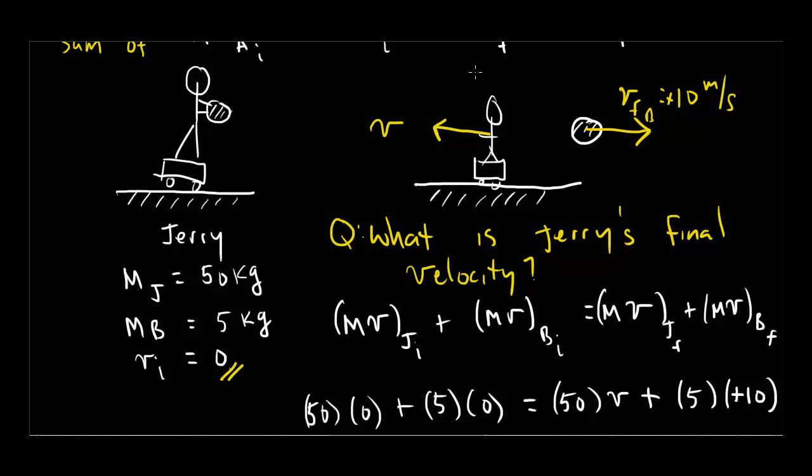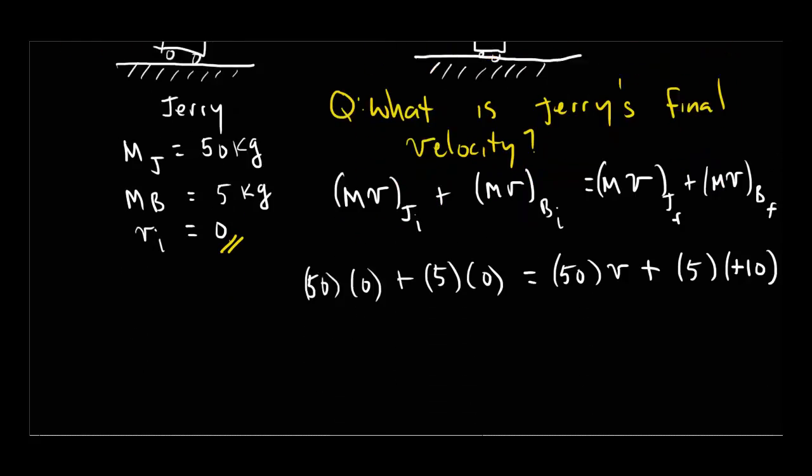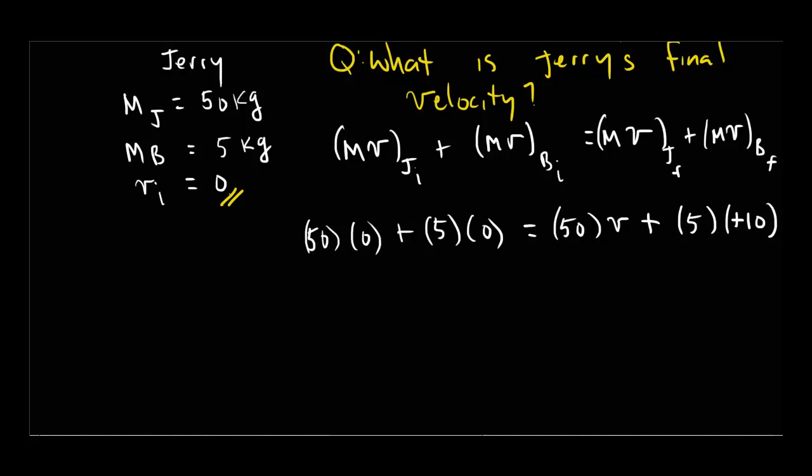We need to be very careful about directions and the way we label directions. I'm choosing to call this positive. So for my problem, in my world, this direction, to the right, this is the positive direction in my world. You could choose to call that the negative direction in your world. It doesn't matter. I'm calling to the right positive. So now let's follow through here. This whole left-hand side, zero plus zero is zero. Zero equals 50V plus 50. Move the 50 over. Negative 50 equals 50V. Divide both sides by 50. V equals negative 1 meters per second.